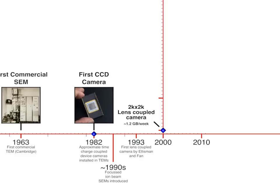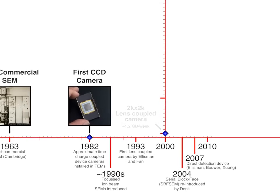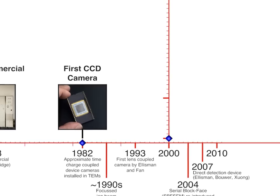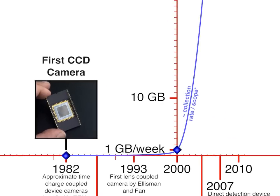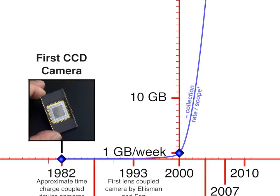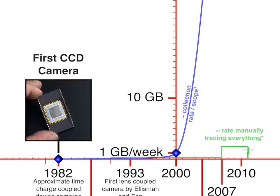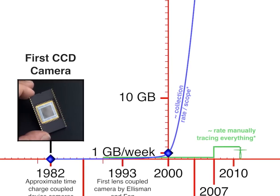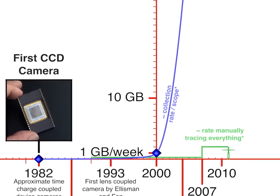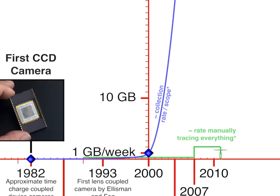Since then, however, further technical advances — including the reintroduction of serial block face scanning electron tomography by Winfried Denk in 2004 — have made it possible to acquire data much, much faster. Let's look at what's happened since 1982 to the rate of data acquisition. This blue trend line approximates the amount of data new instruments can obtain when an operator spends a full week on the microscope collecting images. By contrast, this green line shows the approximate speed a single human can manually segment these images of cells, if told to trace every visible compartment on every slice.